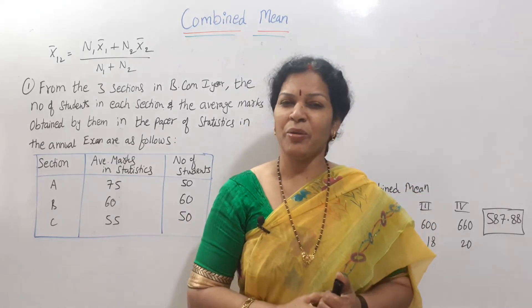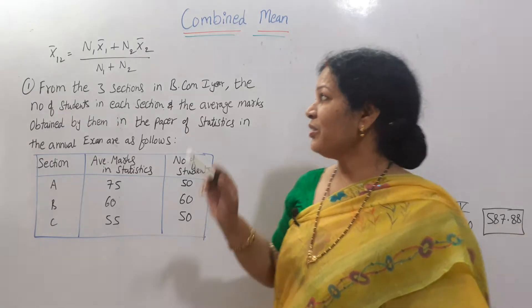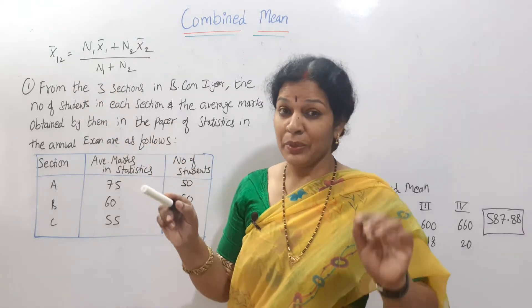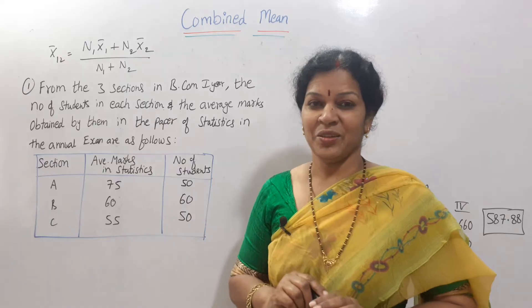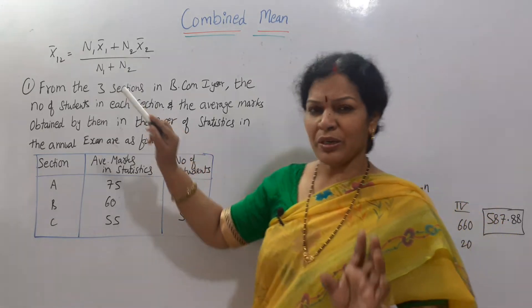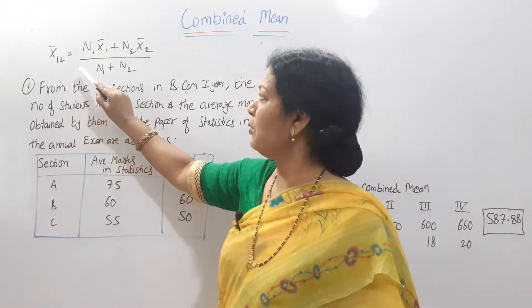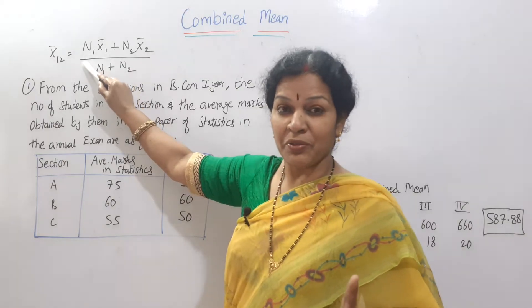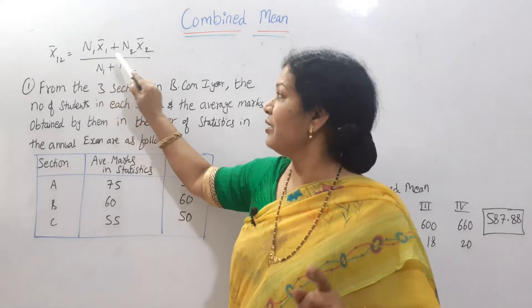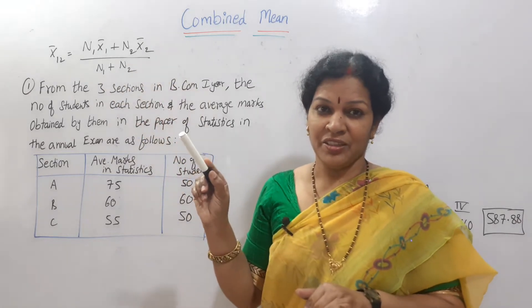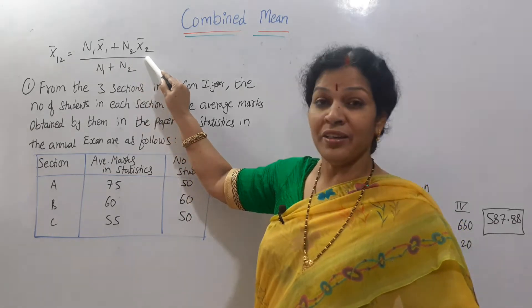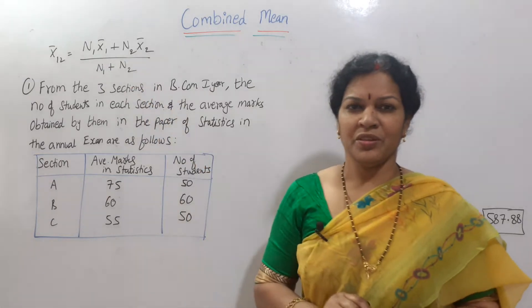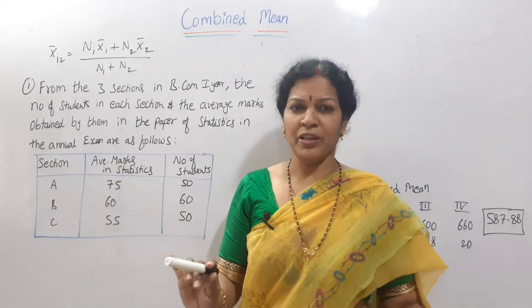When mean is given of different segments, how do we calculate the combined mean? Mean of all the means, that's combined mean formula. If you remember, problem is very simple. Now see the formula: X bar 1 2, X bar means arithmetic mean. If two means are given, this is 1, 2. If means are three given, then 1, 2, 3. Like this the formula can be extended. Now assuming that two means are given, according to the formula, X bar 1 2 is equal to n1 X bar 1 plus n2 X bar 2 divided by total number of employees, both the factories n1 plus n2.